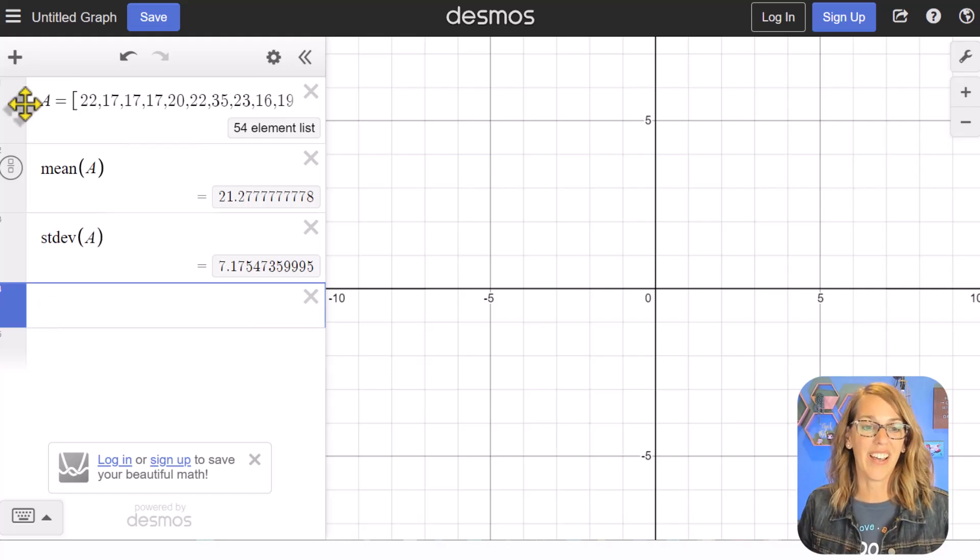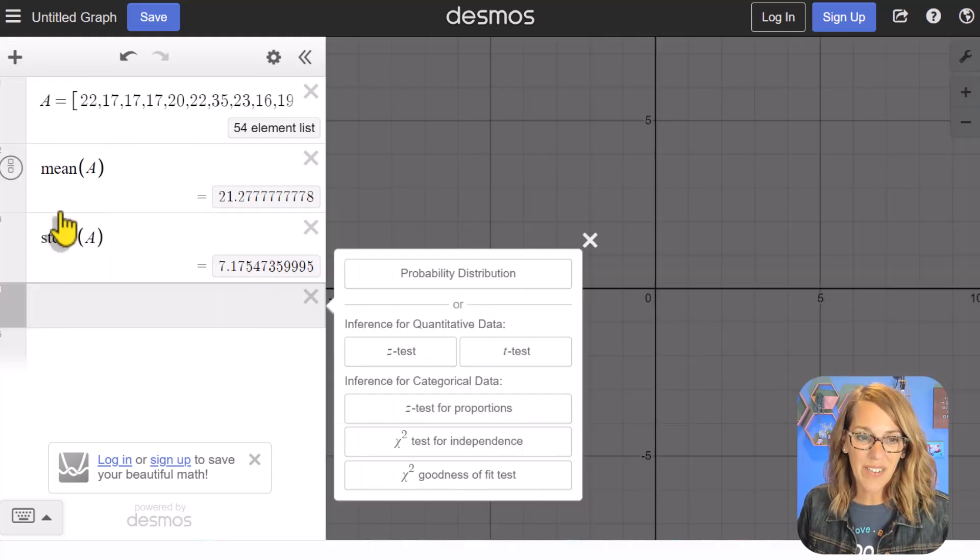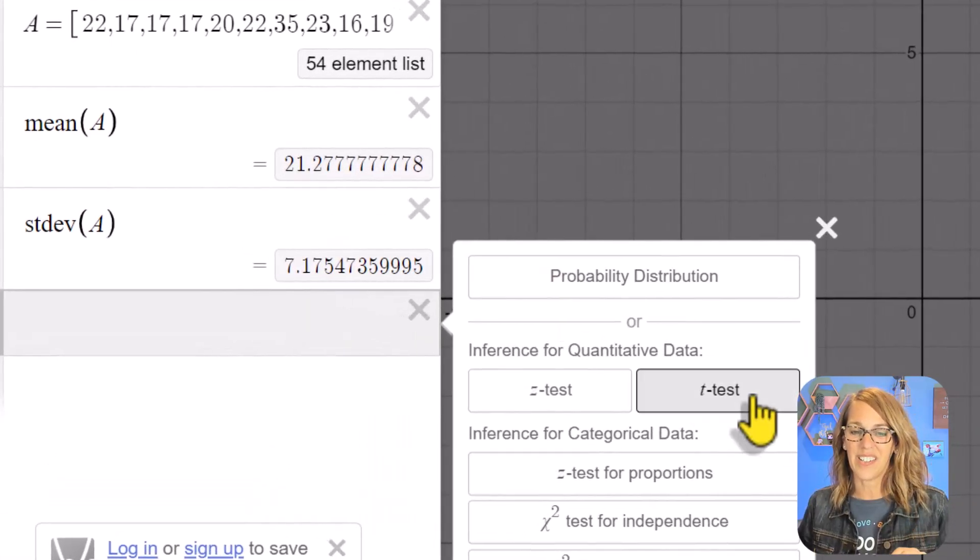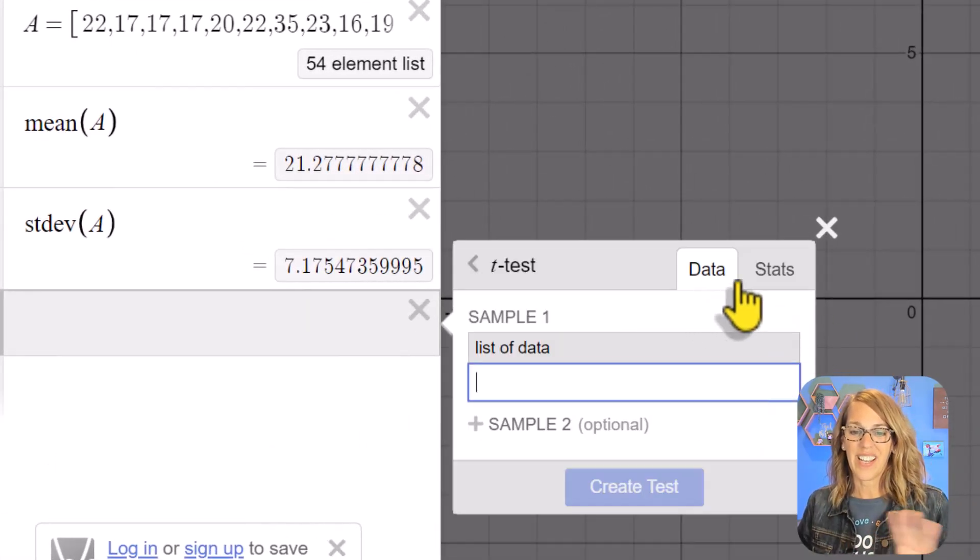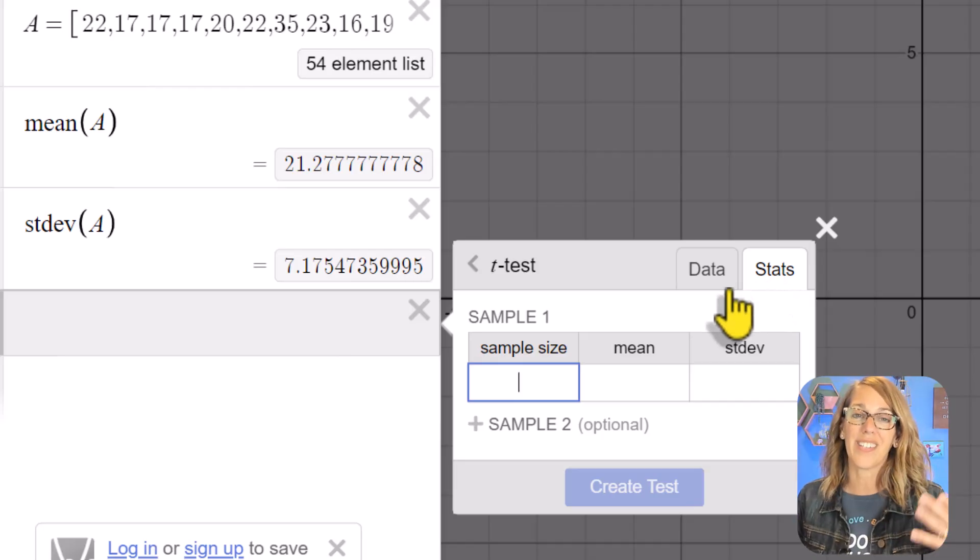Putting our cursor in an empty cell, I'm going to grab that plus sign in the upper left corner and then I want inference, and we're going to do the t-test and it says do you want data or stats. I'm going to put the stats in here first. A lot of these hypothesis tests just come with a sample size, a sample mean, and a sample standard deviation. Here's how you would do those.